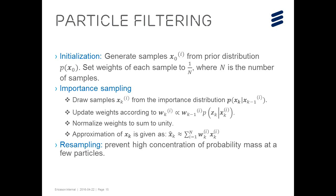After we obtain the weight of each particle, the position estimation is the weighted sum of all the particle samples. At the end of each iteration, we need to check if the resampling is needed to prevent high concentration of probability mass at a few particles.